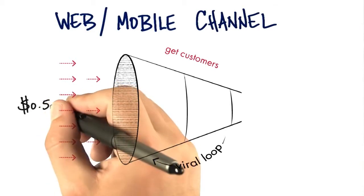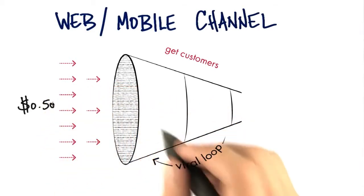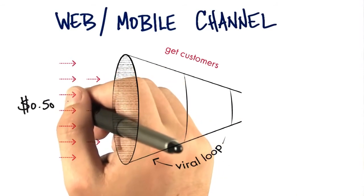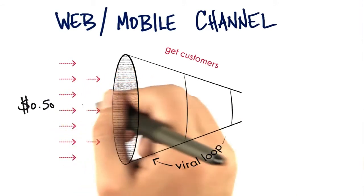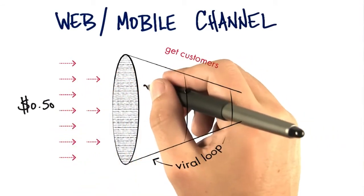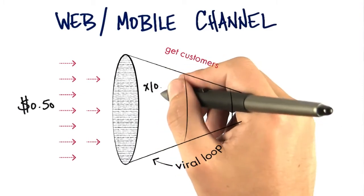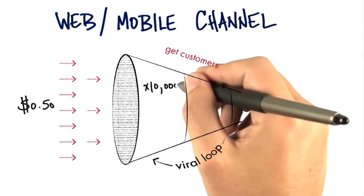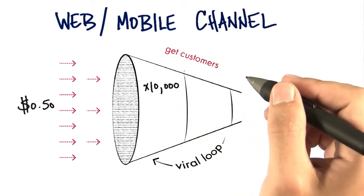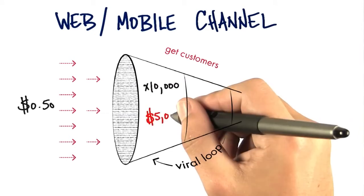Let's assume I'm using Google AdWords and I'm paying 50 cents for pay per click. My campaign at 50 cents each gets me 10,000 people to come look at my website. 50 cents times 10,000 — that cost me $5,000.